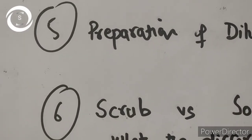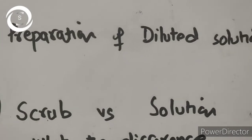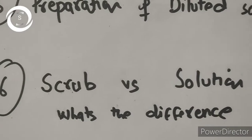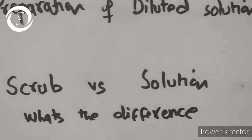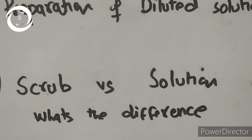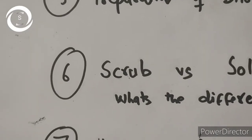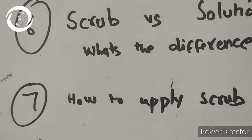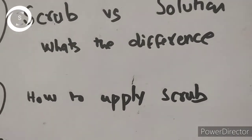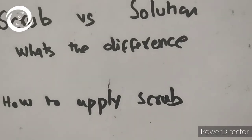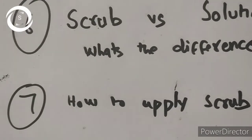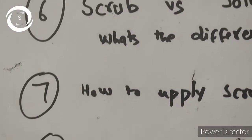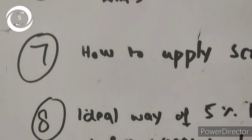Pyodine comes in either solution form or scrub form. Scrub contains soap and has a cleansing effect; it is used by OT personnel to disinfect hands and arms. First, wet hands with water and pour a few ml of scrub on hands, rub vigorously for 15 to 20 seconds covering all surfaces, then rinse thoroughly. Do this two or three times, then dry with a disposable towel.